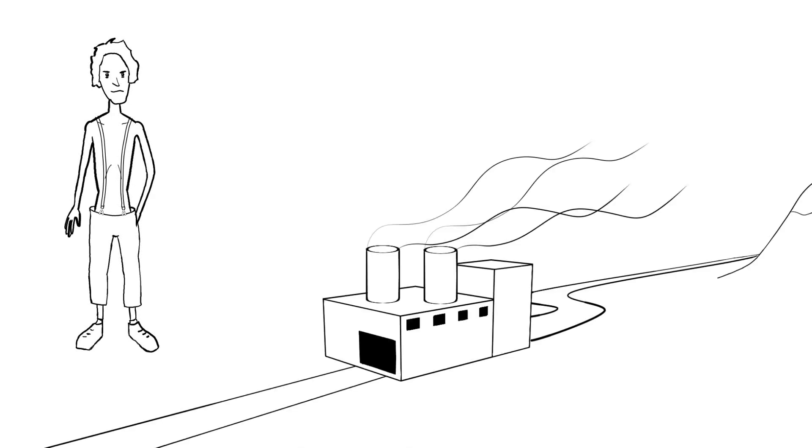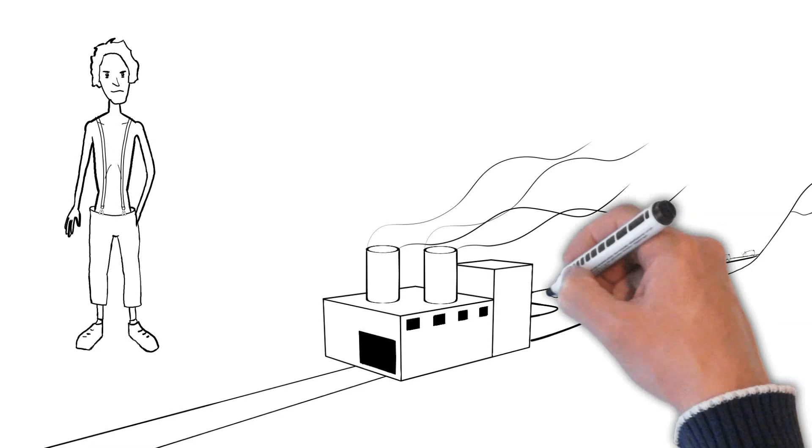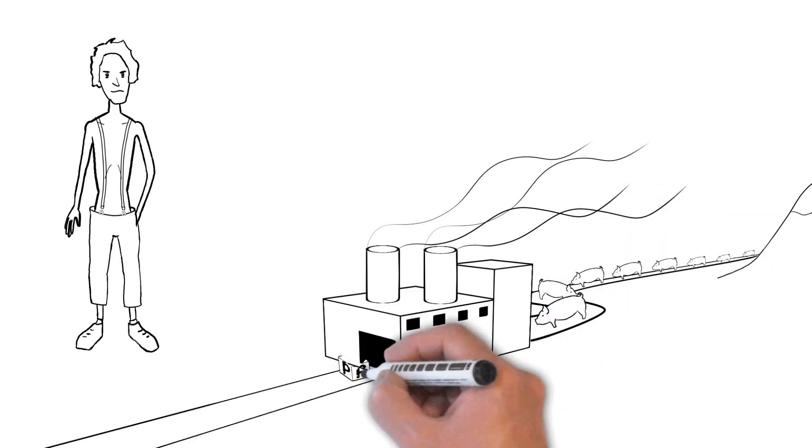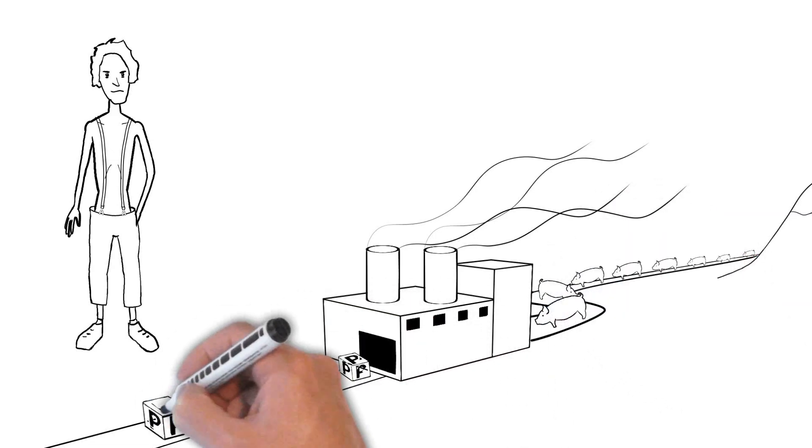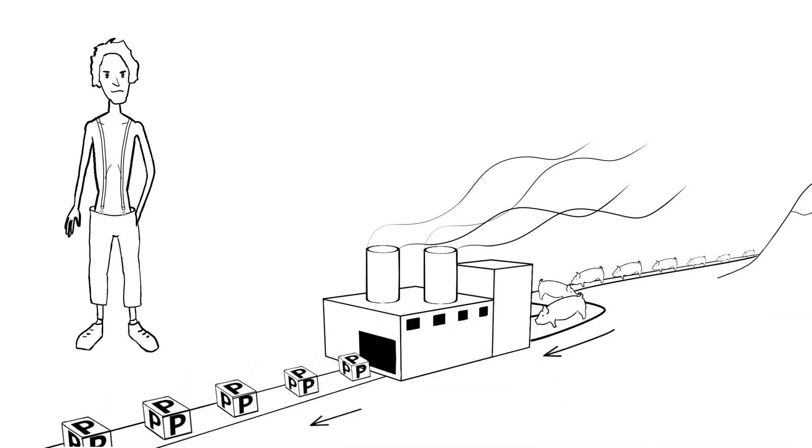At the end of the Second World War, people were famished and food was scarce. There was an urgent need to mass produce cheap and plentiful protein in Europe.